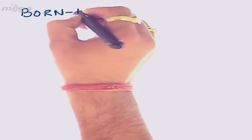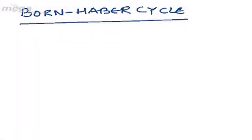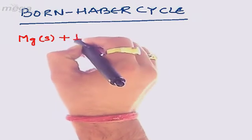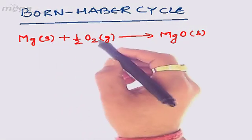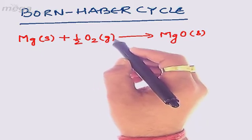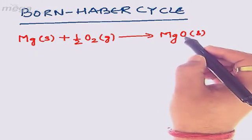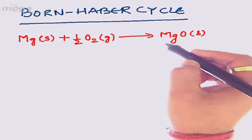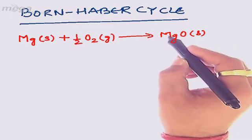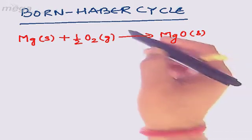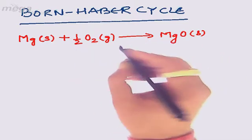Let's start the Born-Haber cycle with an example. We'll take magnesium solid combining with oxygen to form magnesium oxide solid through ionic bonding. Magnesium, being a metal, exists in the solid phase, while oxygen exists in the gaseous phase. These two combine through ionic bonding to form magnesium oxide, which exists as a lattice, and the energy involved in forming that lattice is the lattice energy we need to determine.